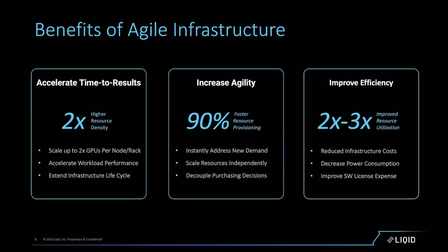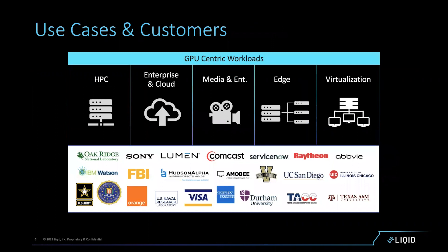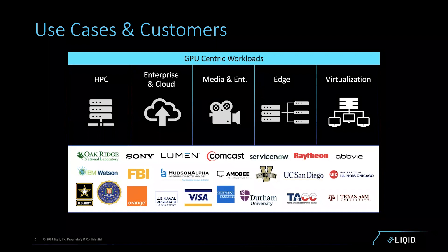Where is agile infrastructure being deployed and where are we winning? There are a handful of use cases we're finding a home for our solution. One use case is around HPC — high performance computing — very large systems with large quantities of accelerators. HPC is not a single workload; it's different researchers bringing different workloads to the system, and different workloads require different hardware profiles.